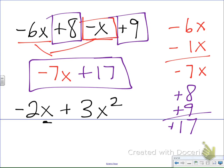So if I have negative 2x plus 3x squared, I can't combine these x's because this is a regular x and this is an x squared. They have to look exactly the same. And that's your basics on combining like terms.